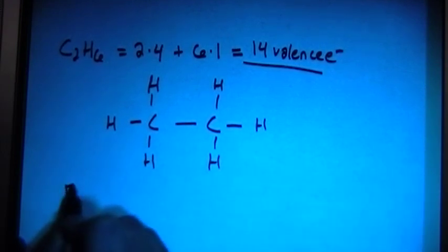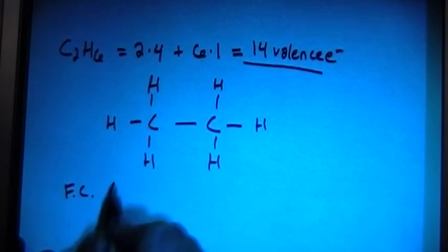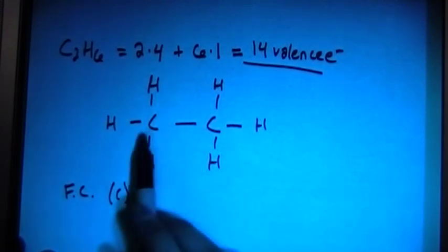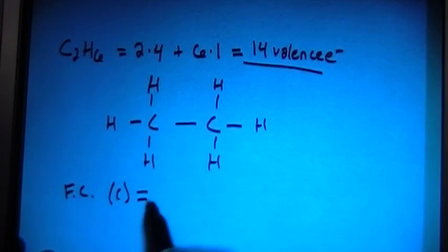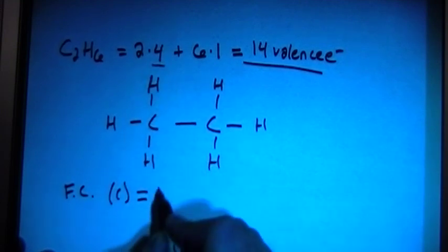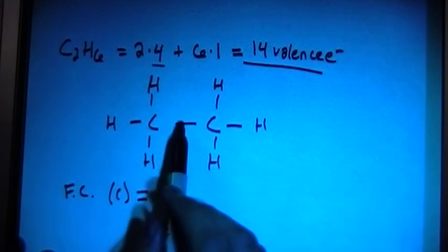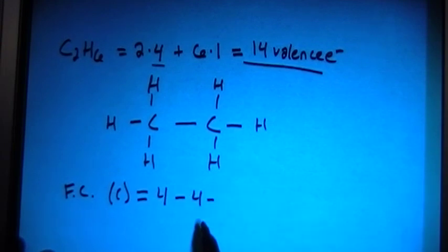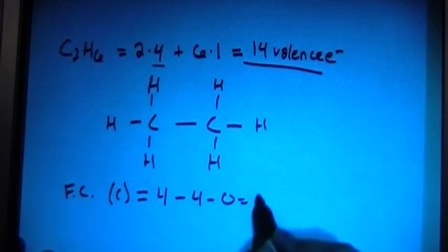So let's go ahead and check the formal charges, just to be sure. So we can check the carbon. And notice that the setup on each carbon is the same, so the formal charges will also be equal. So remember, formal charge is the number of valence brought in, which is 4 for the carbon, minus the number of bonds, 1, 2, 3, 4, minus the number of non-binding electrons, which is 0. And that's going to give us a formal charge of 0. So that's good.